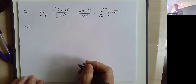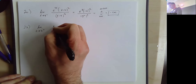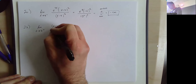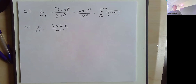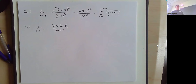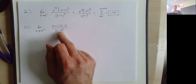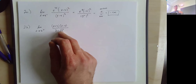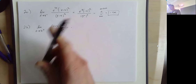Now the limit as x approaches 4 from the right of x plus three times x minus four, over two minus the square root of x. The typical approach: first plug it in — I get four minus four which is zero on top and two minus two which is zero on the bottom, so I have a zero-over-zero type. I need to do something else. So I'll multiply by the conjugate: two plus the square root of x on top and bottom.